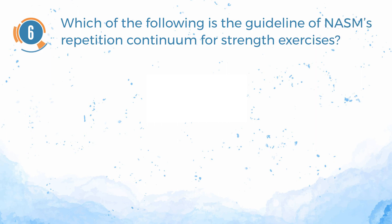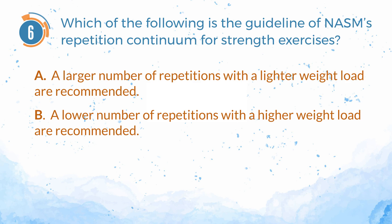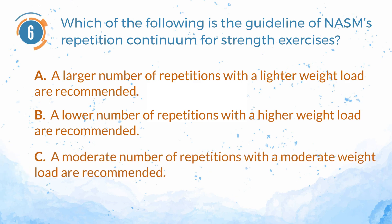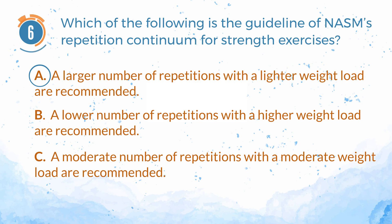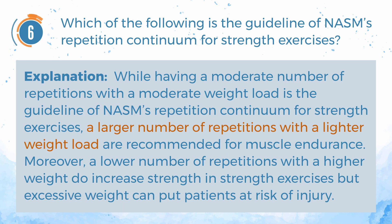Number 6. Which of the following is the guideline of NASM's repetition continuum for strength exercises? A. A larger number of repetitions with a lighter weight load are recommended. B. A lower number of repetitions with a higher weight load are recommended. C. A moderate number of repetitions with a moderate weight load are recommended. The answer is C. A moderate number of repetitions with a moderate weight load are recommended. Explanation: While having a moderate number of repetitions with a moderate weight load is the guideline for strength exercises, a larger number of repetitions with a lighter weight load is recommended for muscle endurance. A lower number of repetitions with a higher weight can increase strength but excessive weight can put clients at risk of injury.